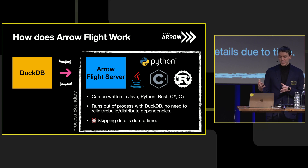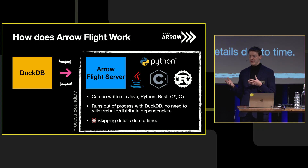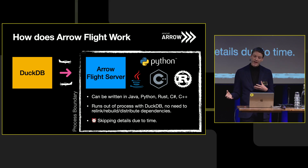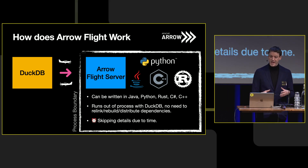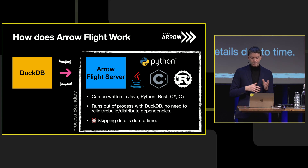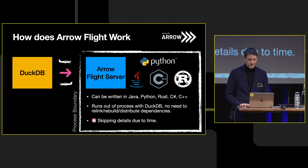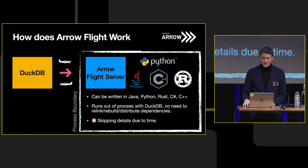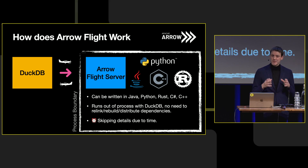Looking back at the picture, we just spoke about extensions written in Go. Arrow is a really great package because it has implementations in many languages. You can write flight servers today in these various languages. The best explanation I have about Arrow Flight is there are cookbooks on the internet that can teach you how to do it.